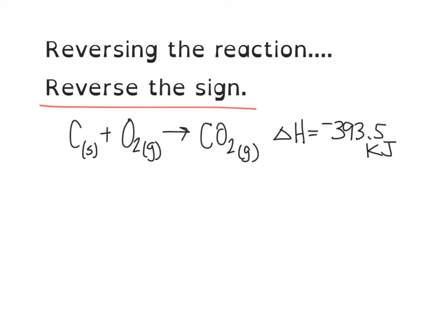Our first rule for dealing with thermochemical equations says that reversing the reaction reverses the sign. Sometimes you're going to need to change the direction of the reaction, and you will have to then take into account how that changes the ΔH.